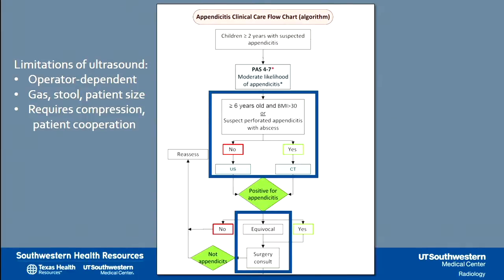It's the middle group — scores 4 through 7 — that becomes more challenging. Some signs really seem like appendicitis but others don't, so the recommendation here is for imaging.